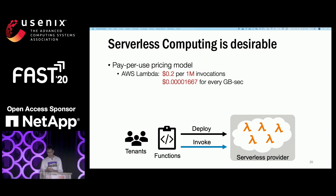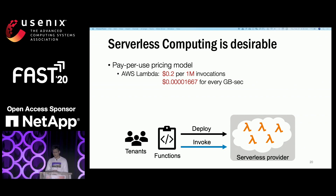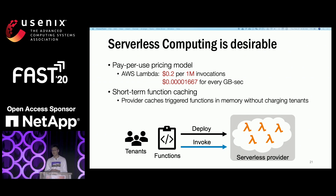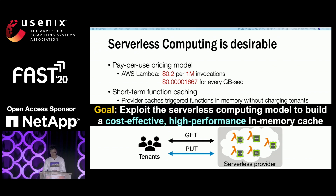The serverless computing model is attractive because of two features. First is the pay-per-use charging model — using AWS Lambda as an example, Lambda charges users two parts: invocation cost and resource usage cost. Second, it provides transparent short-term caching for functions that are not being triggered, and this is free for the user. Our ultimate goal is to leverage these two features to build a cost-effective and high-performance in-memory cache.